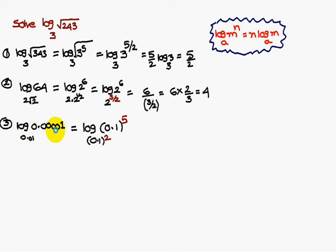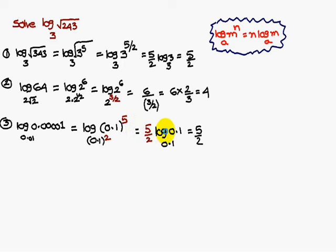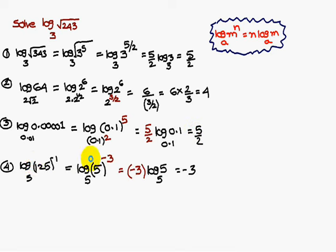Similarly, log 0.001 base 0.01. Here the base is 0.1 squared. Write 0.001 as 0.1 to the power 3, and 0.01 as 0.1 squared. Using the same formula, this gives 3/2 times log 0.1 base 0.1. Since log 0.1 base 0.1 equals 1, the answer is 3/2.